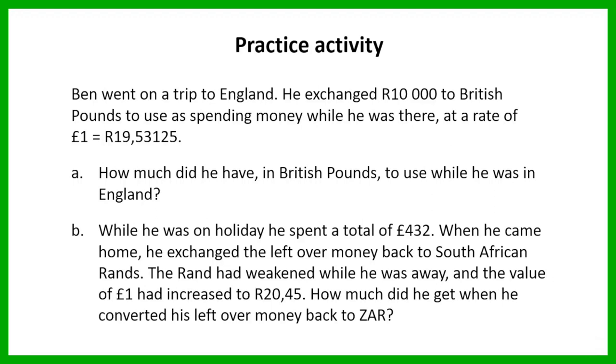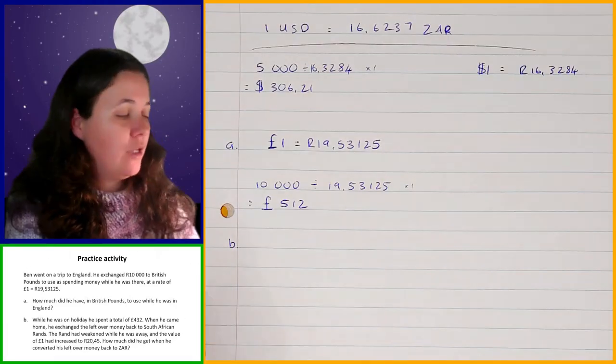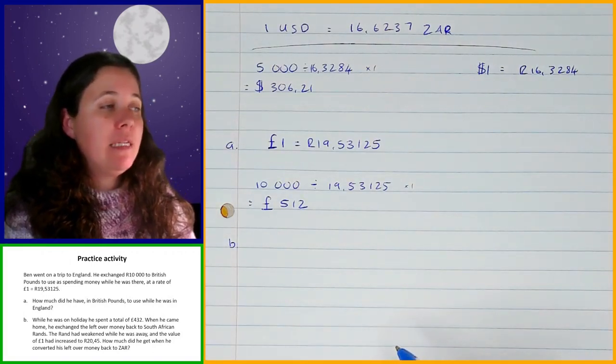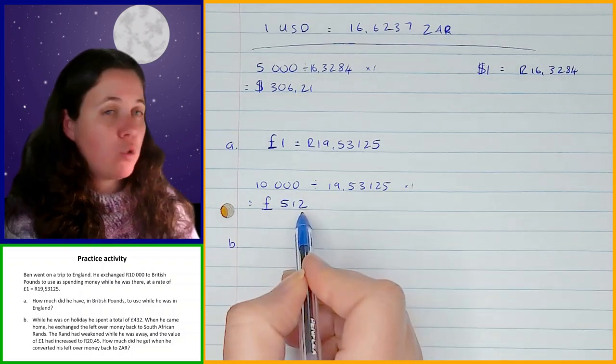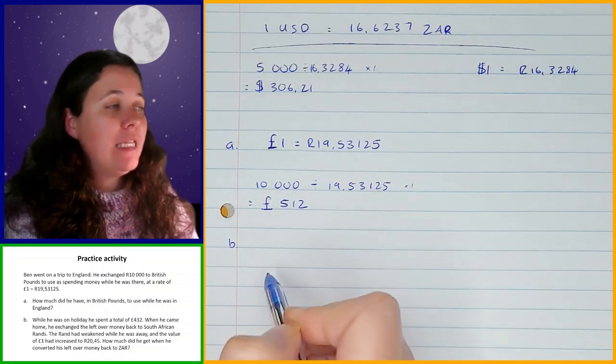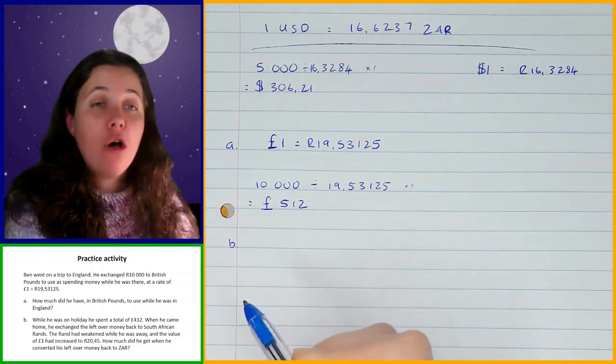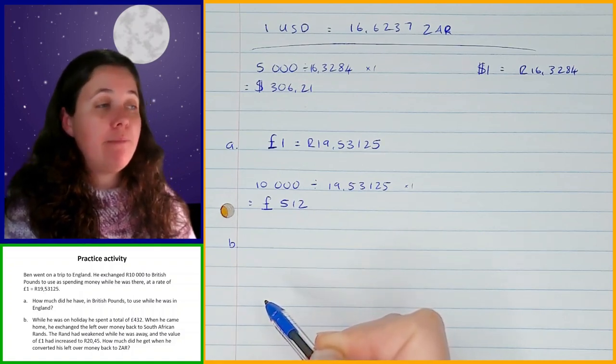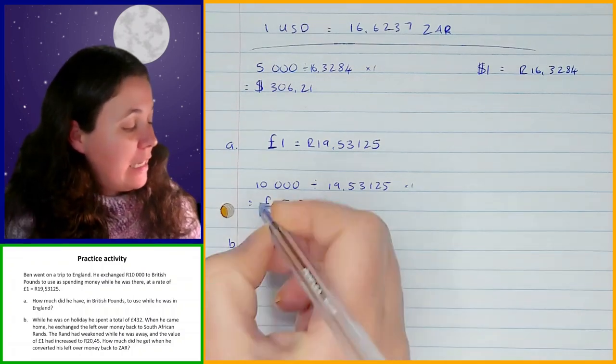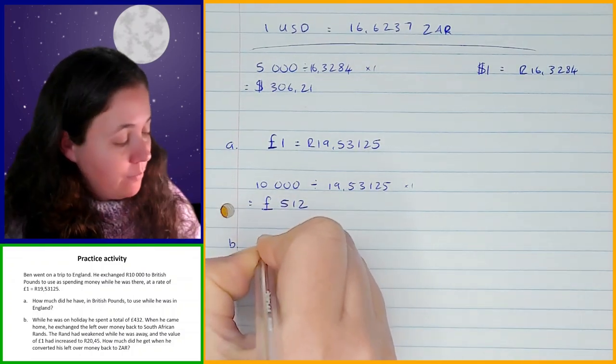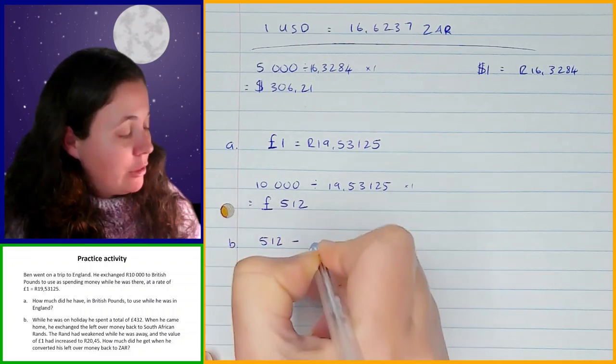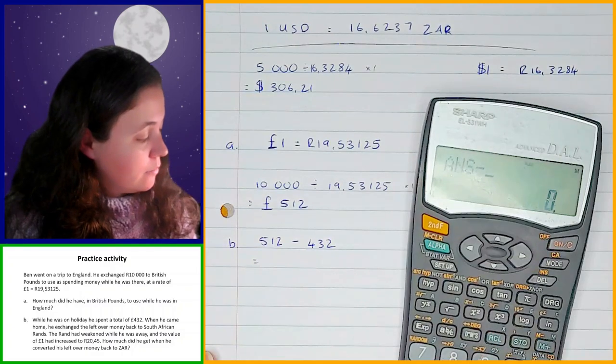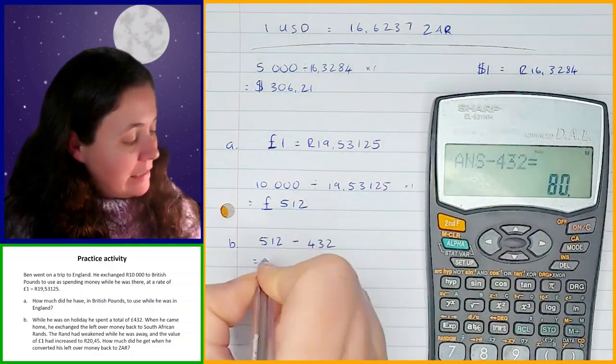You should hopefully be done with that by now, so let's go through that example. So question B, we're told that while he was on holiday, he spent a total of 432 pounds. Now, he had 512 pounds available, and we need to find out how much he has left over after he spent that, because when he came back, he converted the rest of his money back to rands again. So let's take the amount that he had to start with, which was 512, and subtract the amount that he spent, which was 432, and that gives us 80 pounds.